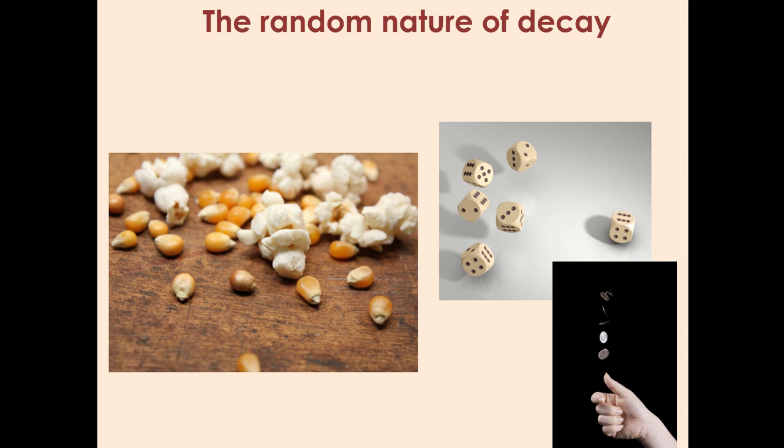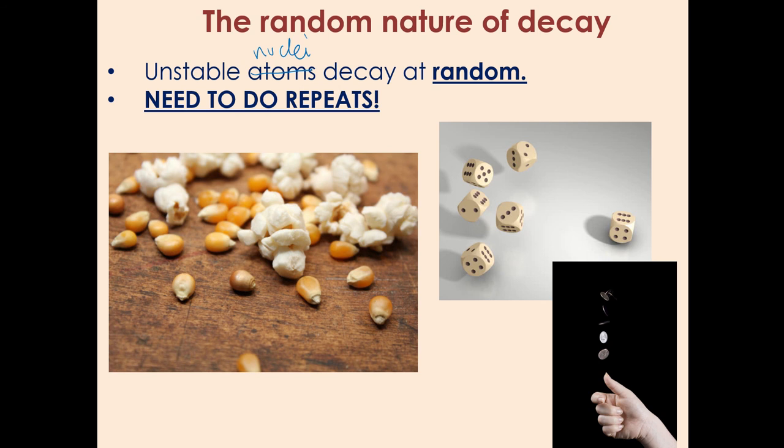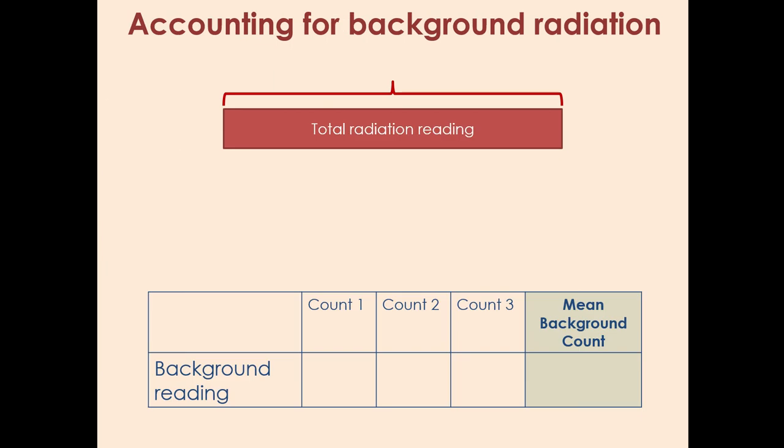The next thing we're going to talk a little bit about is the random nature of decay. The fact that the unstable nuclei decay at random means they're kind of linked to probability. What that means is for this experiment when you're explaining the method it's super important that you tell the person to do repeats. For example, if we compare to a flip of a coin, on average every other one would be heads, every other one would be tails. So if you asked me how many times would I have to flick a coin to get four heads, probably eight. So we're going to have to do repeats here to get the expected result.